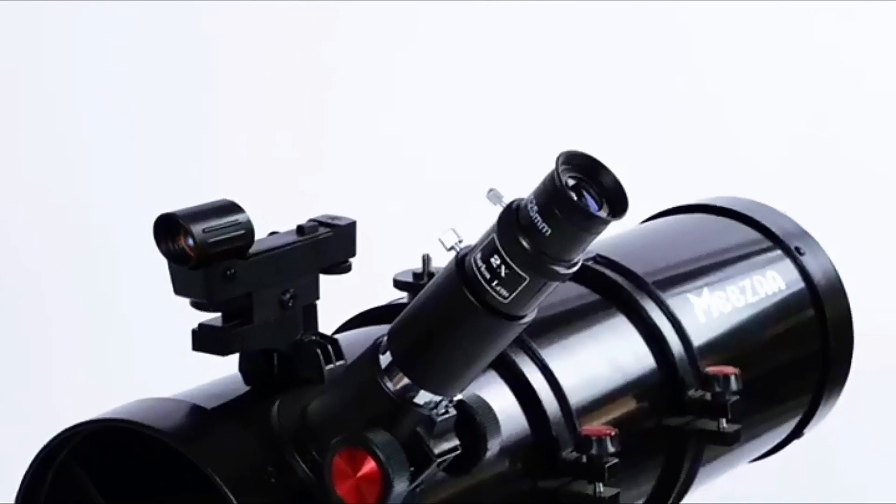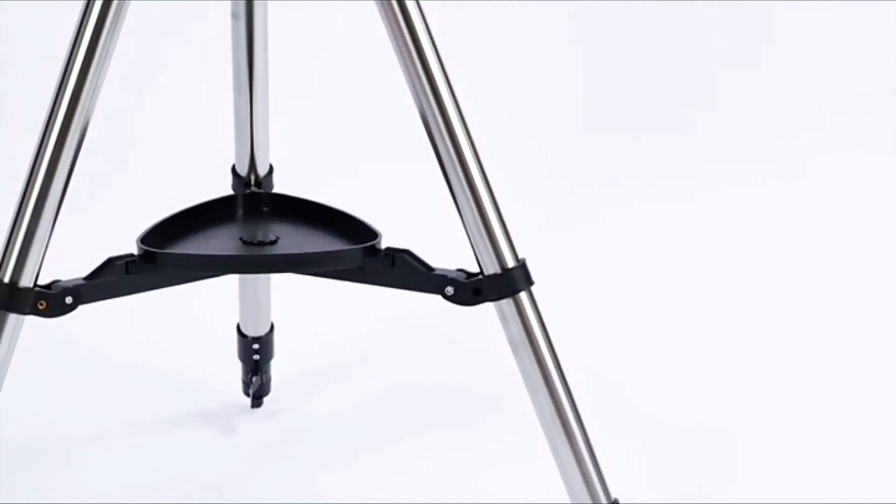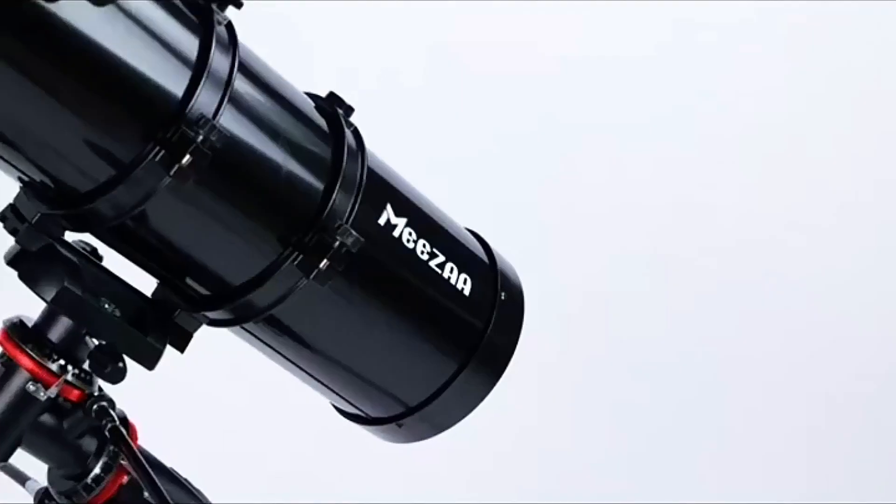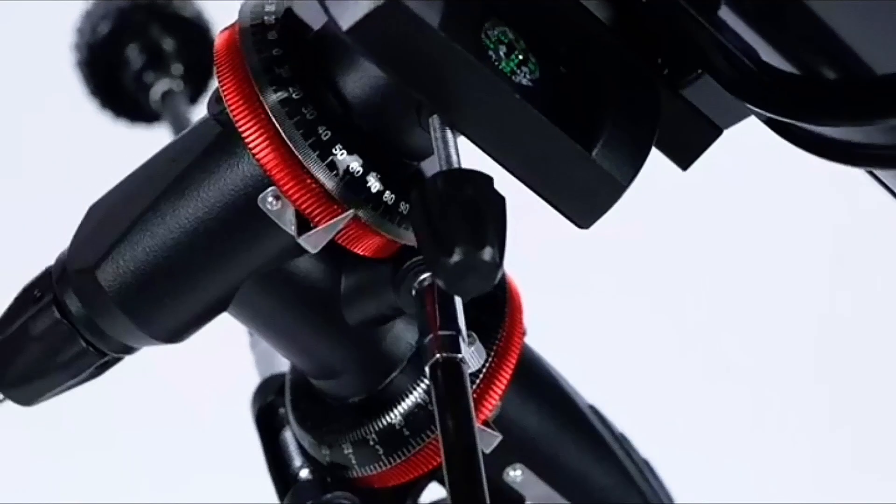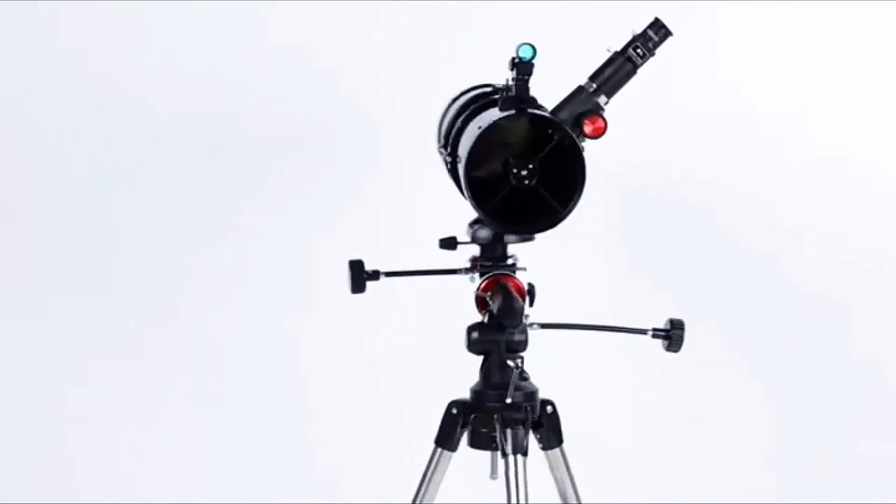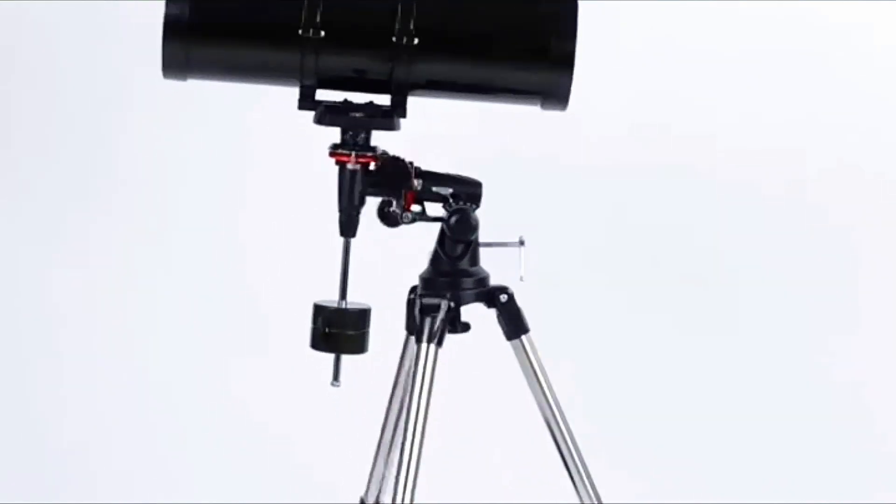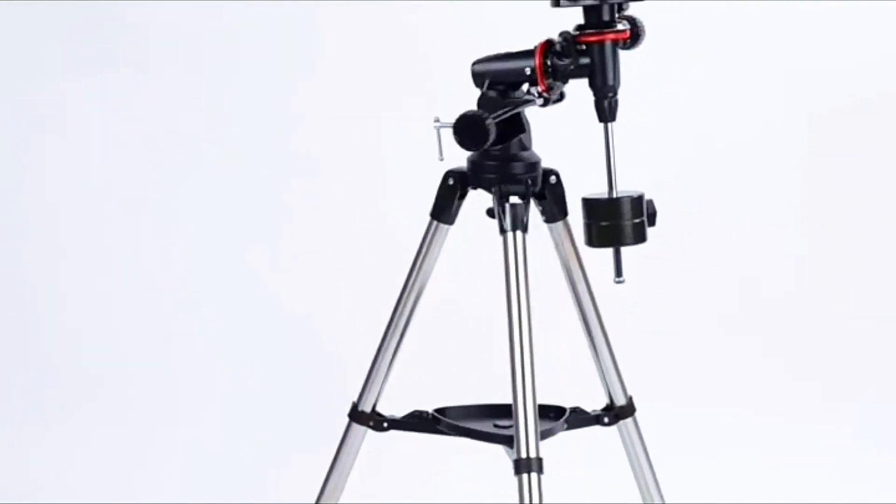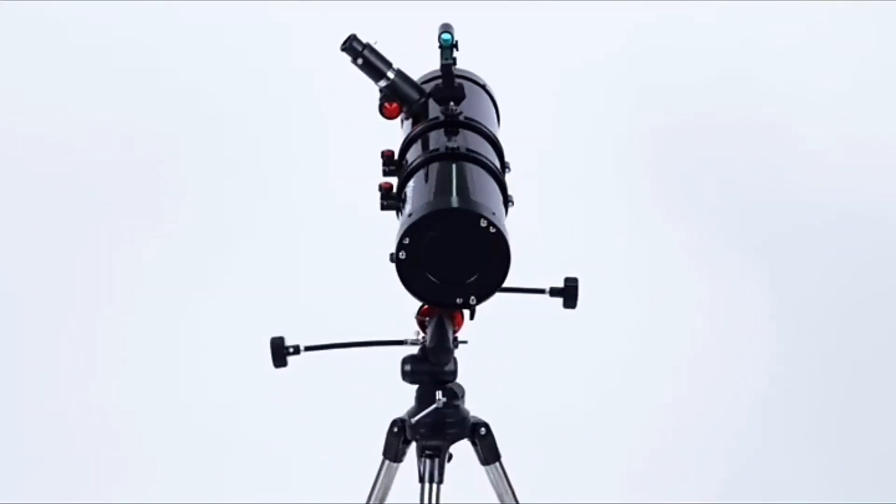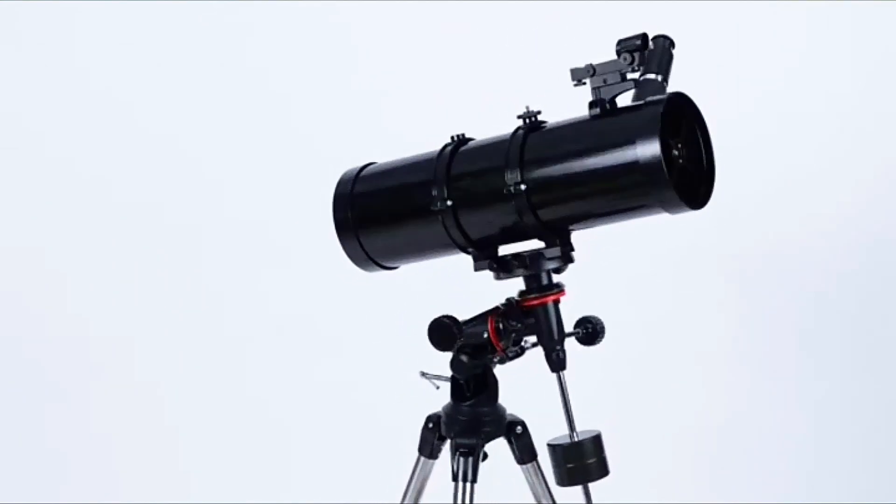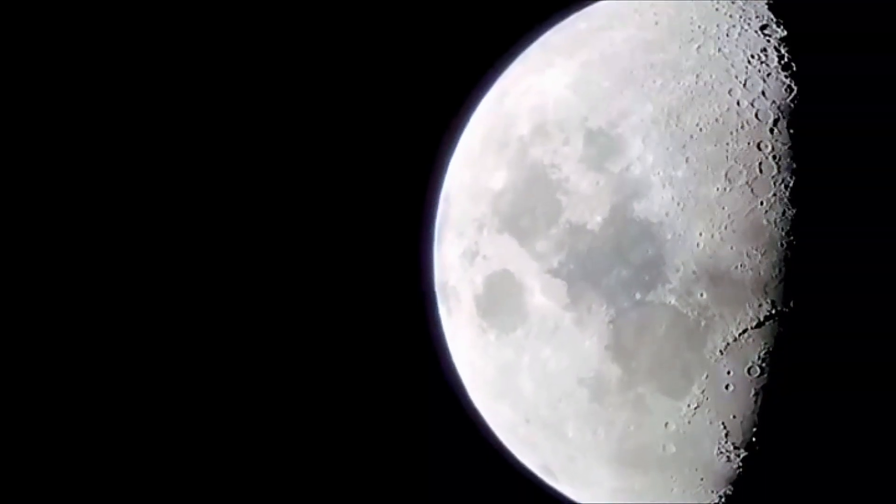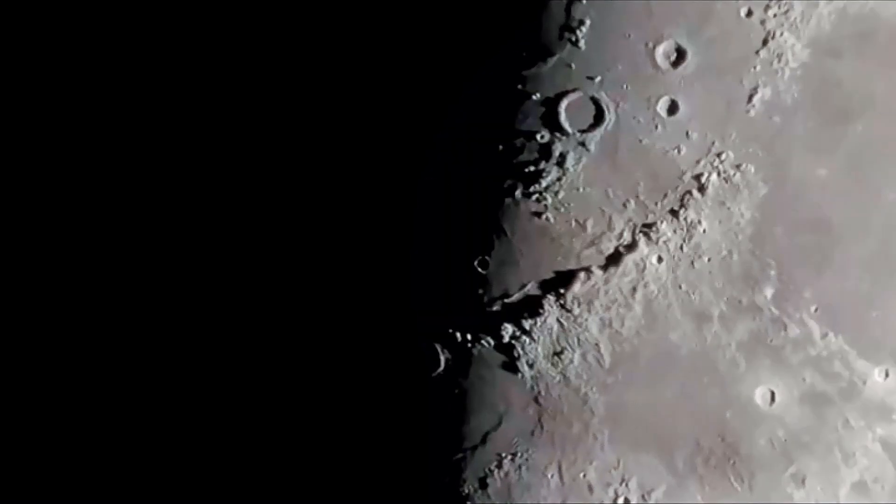The MESA 150EQ Reflector Telescope is a stellar choice for both budding astronomers and seasoned stargazers alike, designed specifically to elevate your celestial observation experience to new heights. Featuring a robust 150mm aperture and a focal length of 650mm, this telescope excels in light-gathering capability, making it ideal for capturing the breathtaking beauty of deep-sky celestial bodies. Its reflector design minimizes chromatic aberration, providing crystal-clear images of distant galaxies, star clusters, and planetary details that will leave you in awe. Accompanied by two high-quality eyepieces and a 2x Barlow lens, you can magnify your views from 26x to an impressive 130x, enabling you to witness the moon's craters and the rings of Saturn with exceptional clarity.